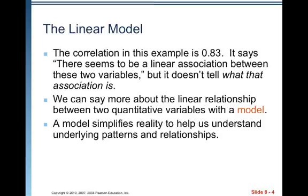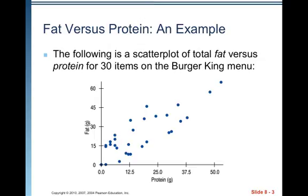The correlation in this example is 0.83, so that makes sense, it's a positive correlation, fairly strong. Looking at the scatter plot, that seems to match up with what we're seeing visually. You can see there's a somewhat linear relationship there, and certainly there's a positive association that as the amount of protein increases, there tends to be an increase in the amount of fat.